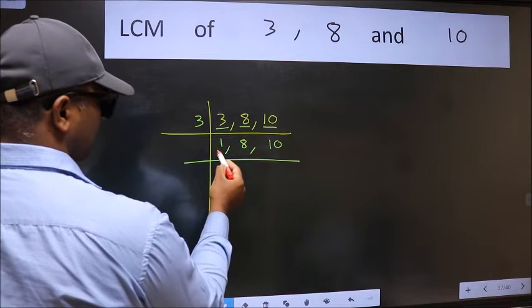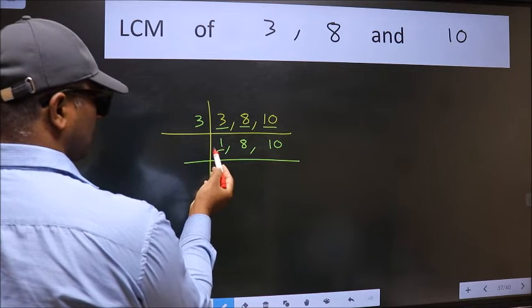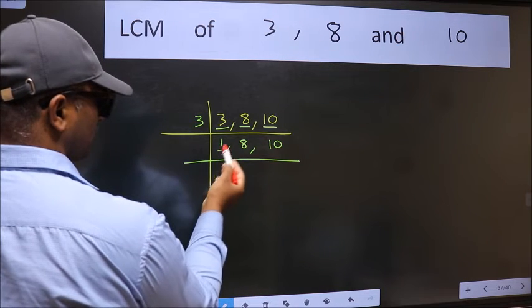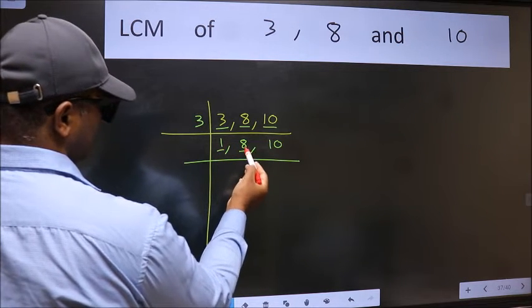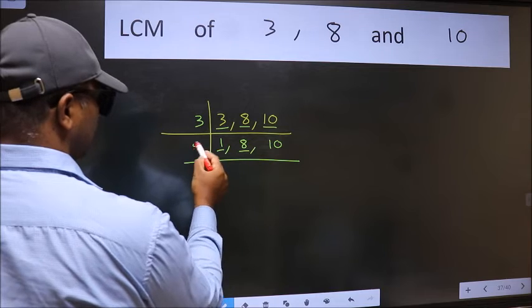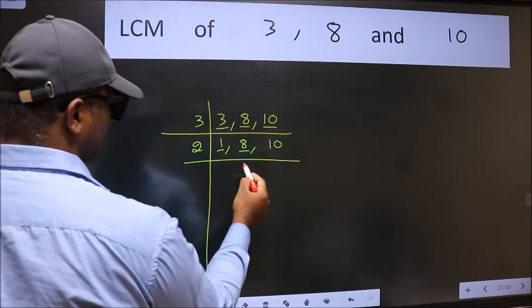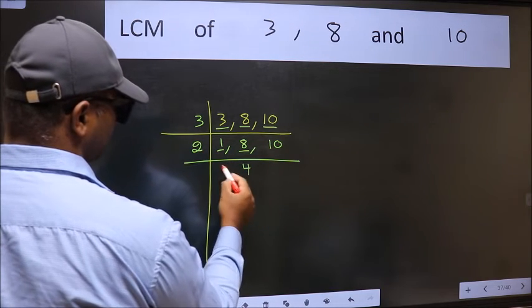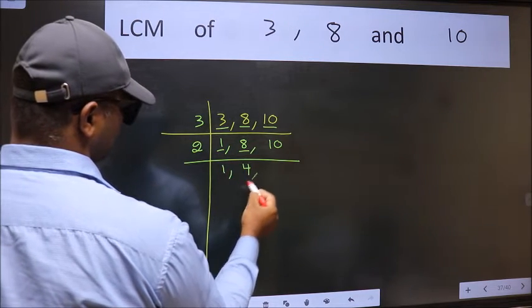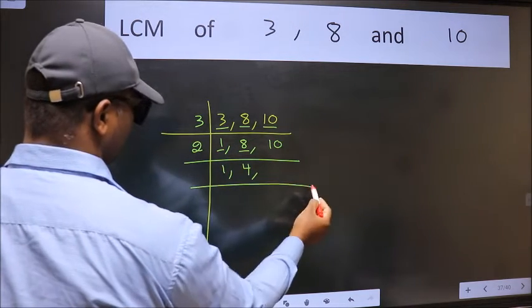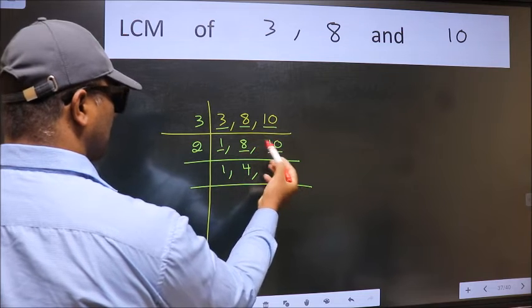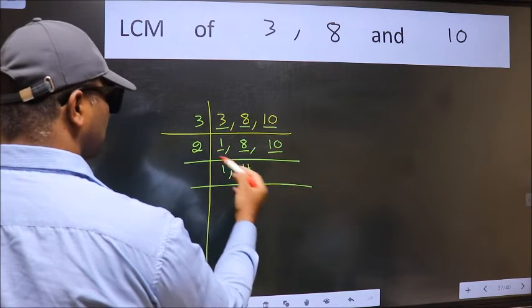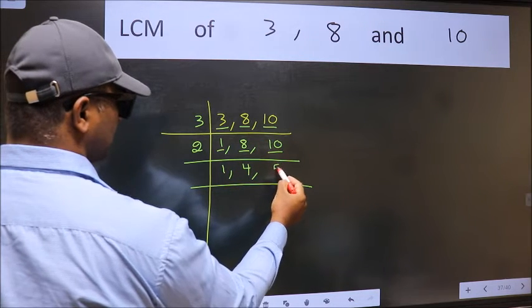Now we got 1 here, so focus on the next number 8. 8 is 2 times 4. The other number 10 — when do we get 10 in the 2 times table? 2 times 5 is 10.